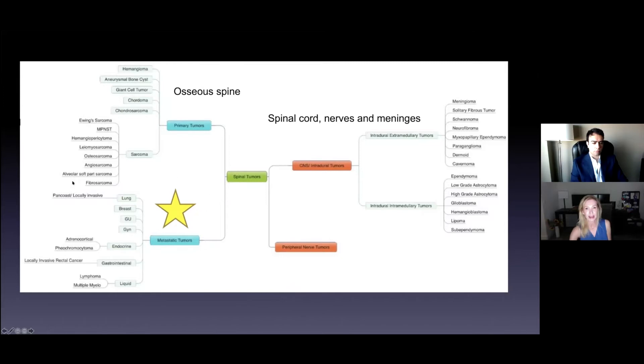The other half of the spine - spinal cord, the nerves and the meninges. So you can have peripheral nerves, which we aren't going to talk about at all today, or you can have tumors within the canal.